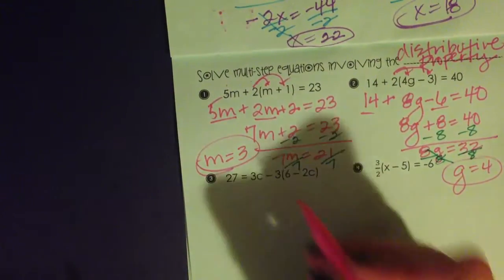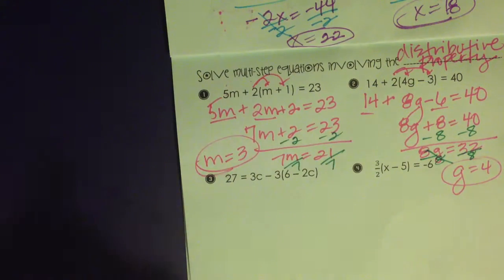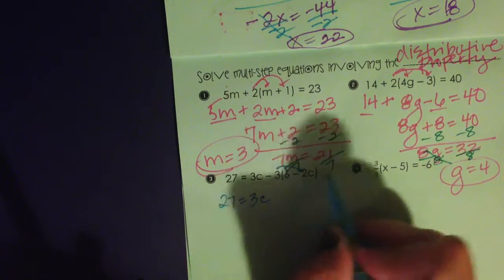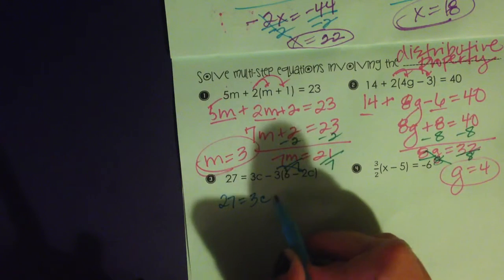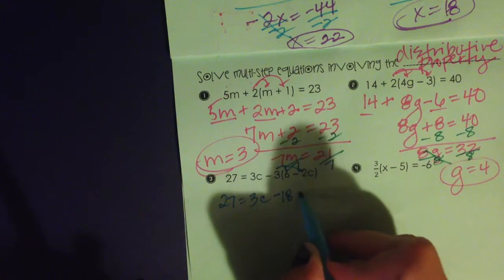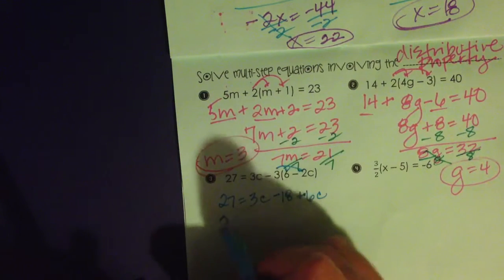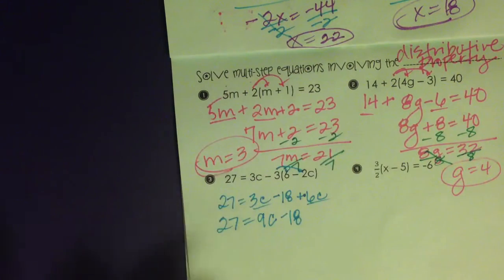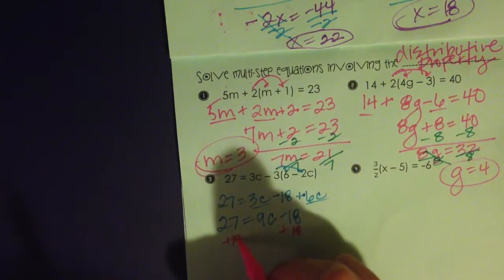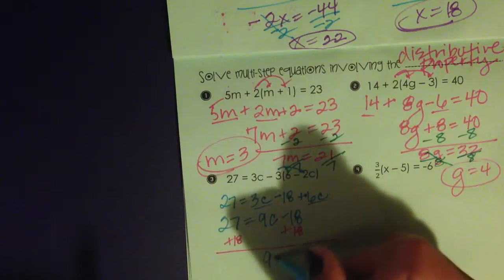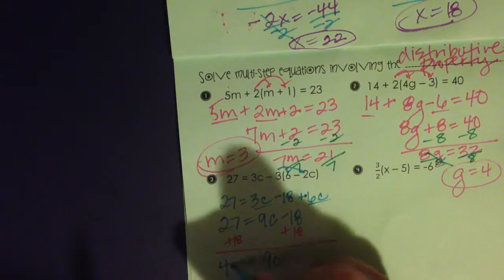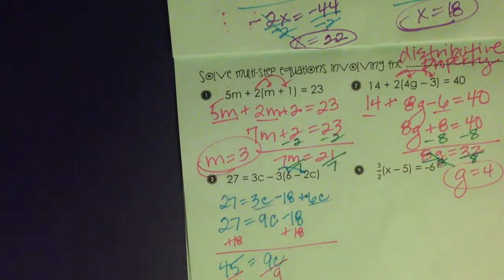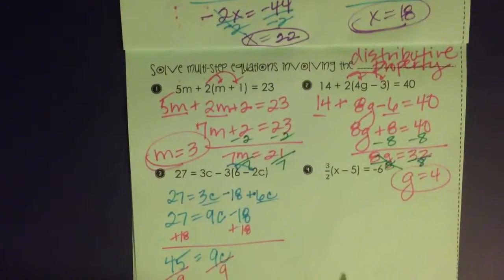Number 3. I'm going to distribute negative 3. Pay attention how I said that. It's minus 3 times this quantity, but that's like distributing a negative 3. Negative 3 times 6 is minus 18. Negative times a negative is going to be a positive 6c. 27 is equal to 3c and 6c have to come together, minus 18. Start undoing from here. Add 18. 27, 36, 45. Divide by 9. 9c is equal to 5. Boy, I sure hope I haven't made any errors. I haven't stopped to check. Wouldn't be the first time, of course.